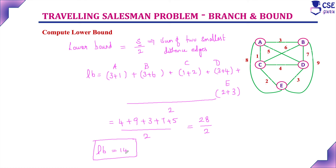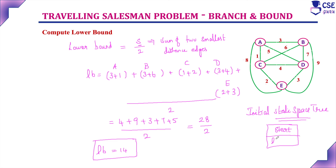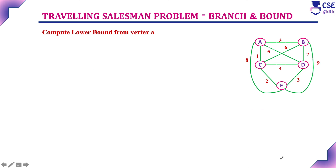Now we compute the lower bound from vertex A to all other vertices to build the first level components. From A, we consider edges to B, C, D, and E. For each path, we apply the same LB = S/2 formula, but the compulsory edge from A is included for both A and the destination vertex.